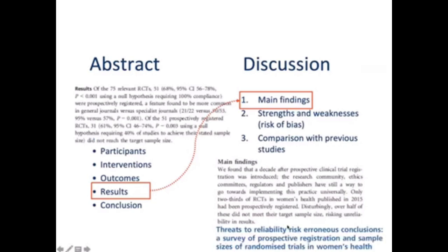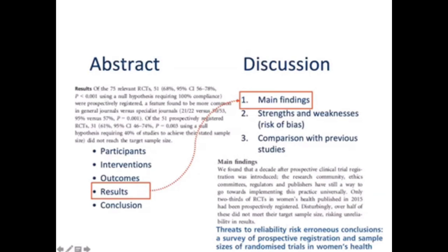Here is a paper — this is the results section as written in the abstract. It says there are 75 articles of which 51 have the null hypothesis prospectively registered. For the discussion, instead of saying 51 of 75 with 68% and a confidence interval, we can simply say two-thirds of the papers were prospectively registered. You can see how we have converted numbers into words, which can go into the main findings paragraph of the discussion section.